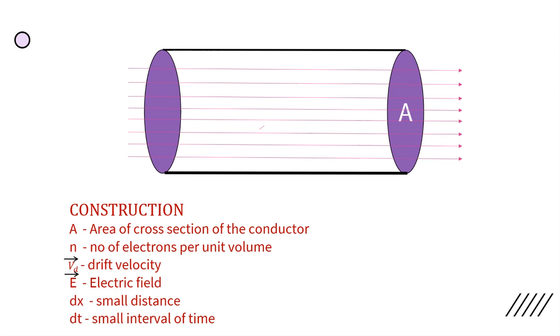It is kept in an electric field E. There are many free electrons in this conductor. They are moving with a drift velocity Vd.